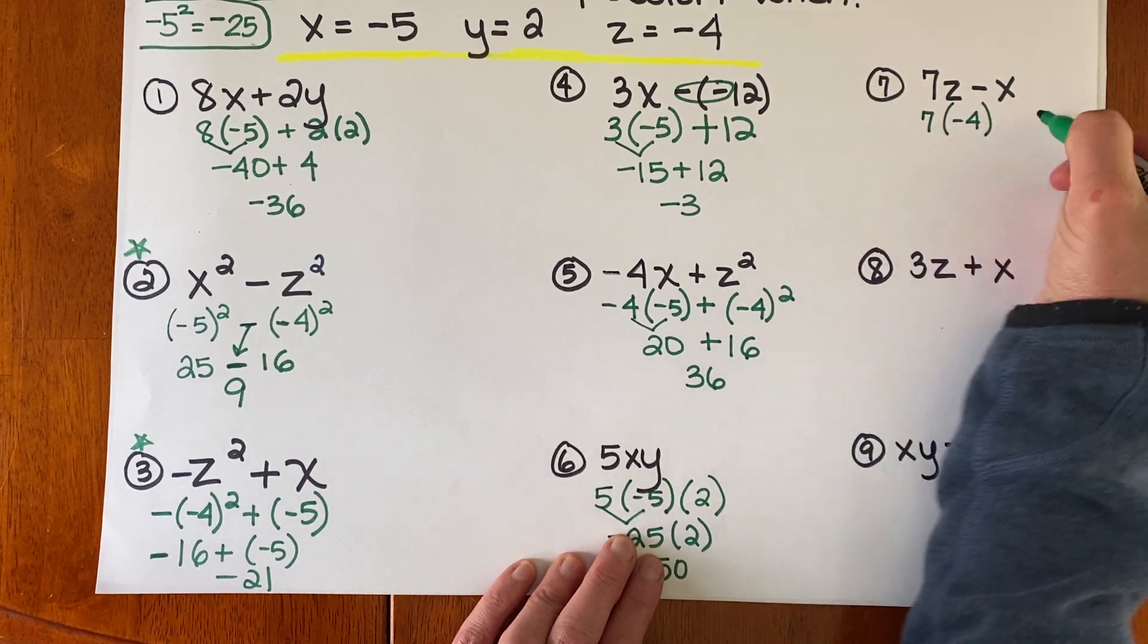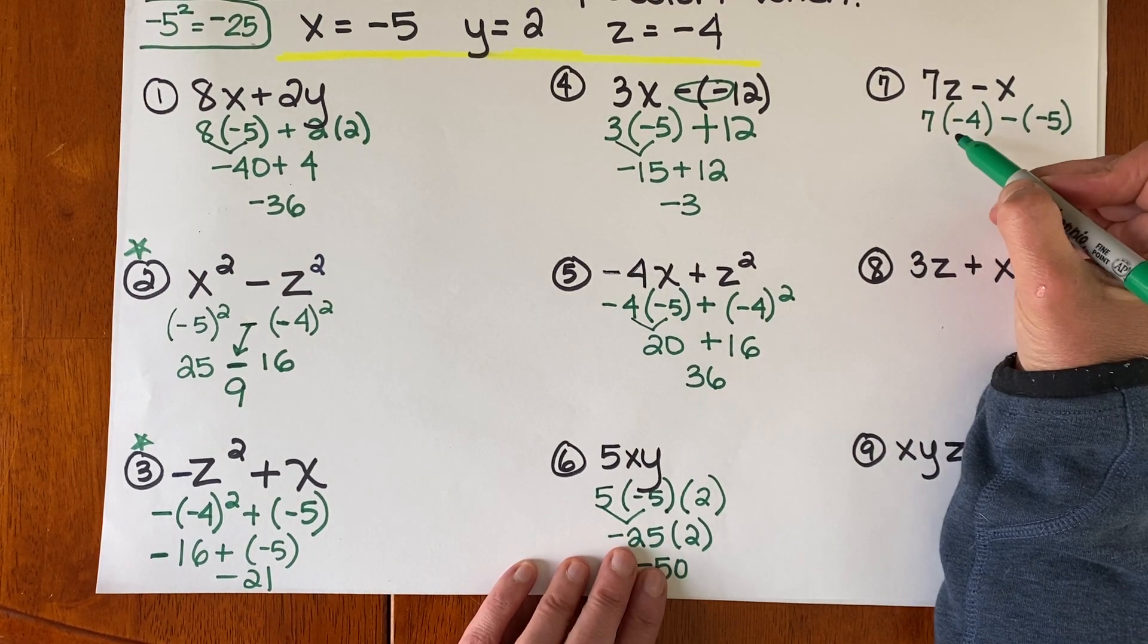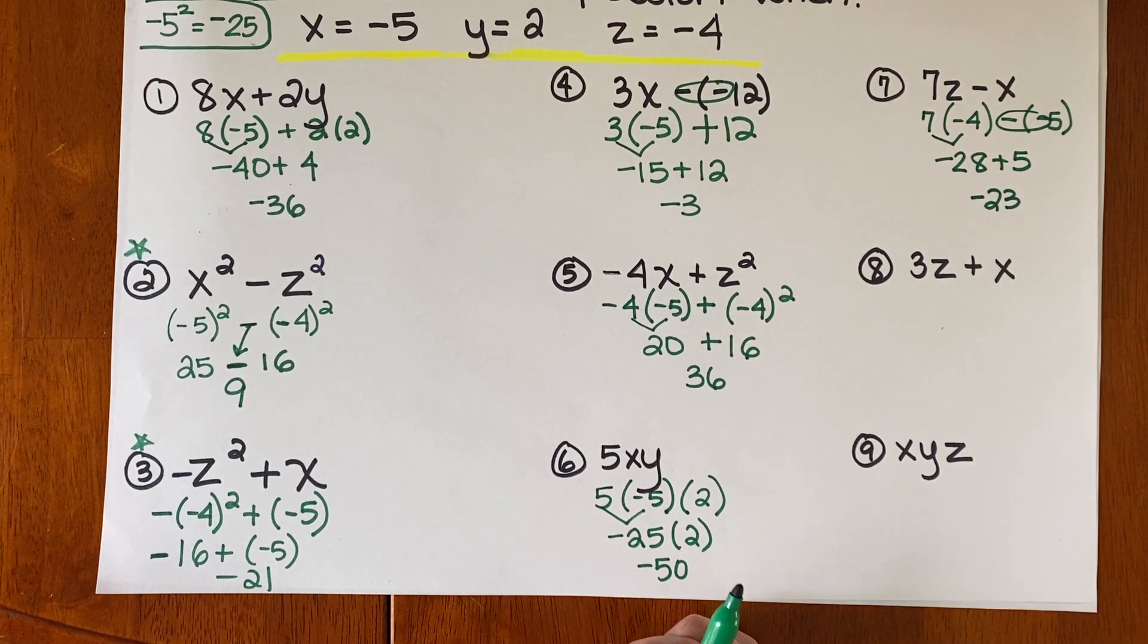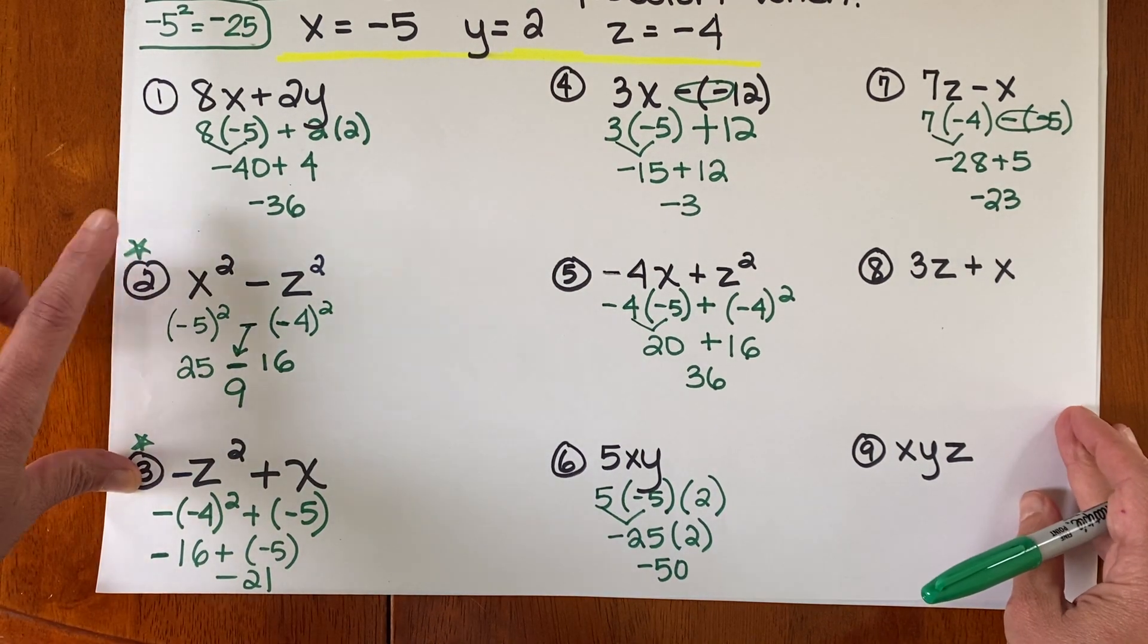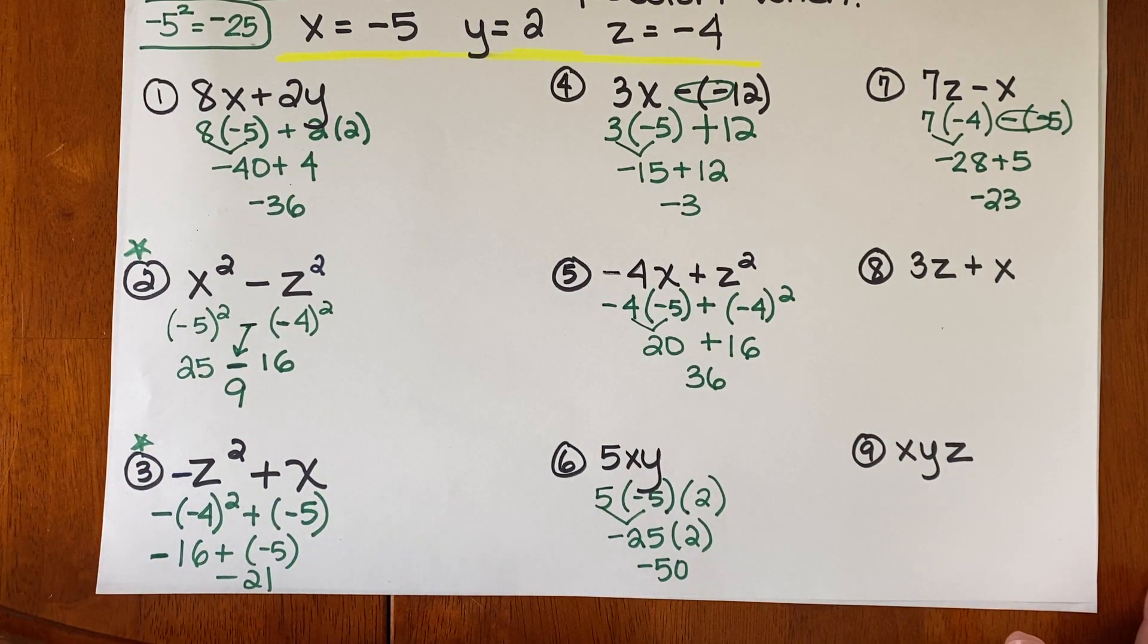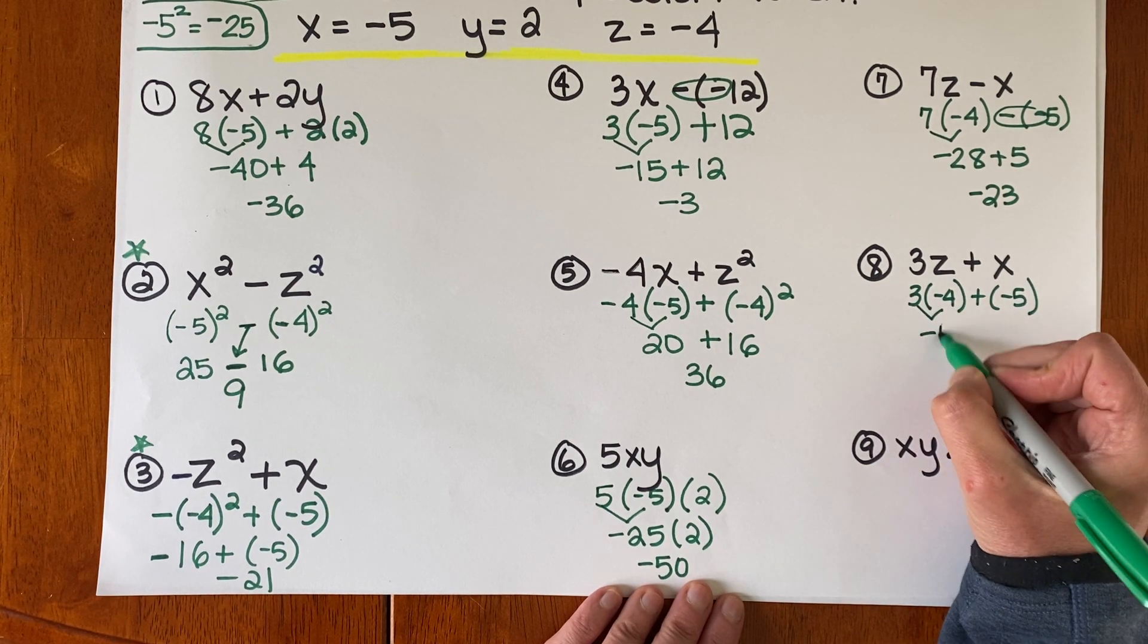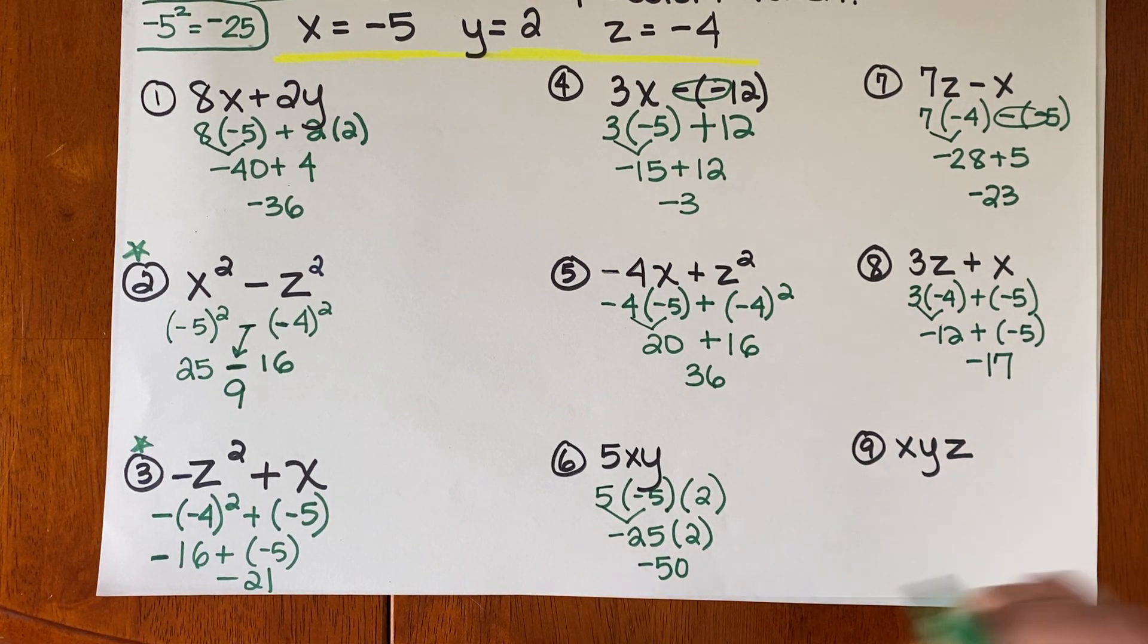All right. 7 times Z minus X is a package of negative 5. So 7 times negative 4 is negative 28. Plus 5 is negative 23. Two more. These two are still my favorites. These two. If I gave you a test, I love every one of these. I really love 2 and 3. But I really love every one of these. All right. 3 times Z plus negative 5. Negative 12 combined with my debt of negative 5 is negative 17.